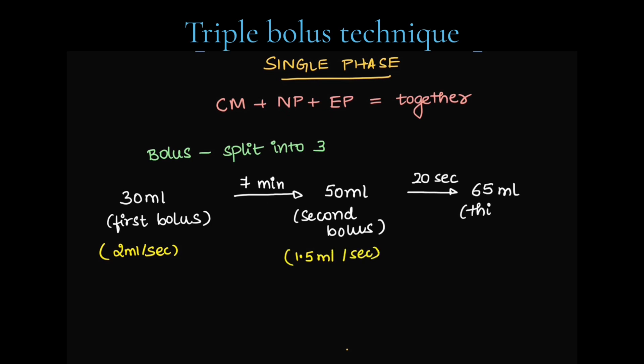Next, after 20 seconds, we give the third bolus that is 65 ml at 3 ml per second. After all these are given, scan is acquired in one single phase after 510 seconds after giving first bolus. So, total of 145 ml contrast is given in the triple bolus technique.